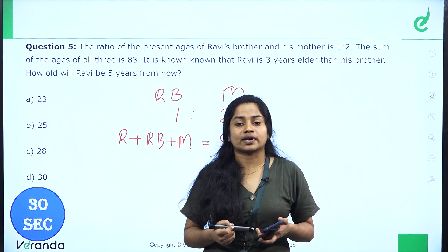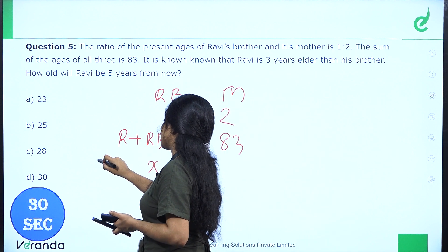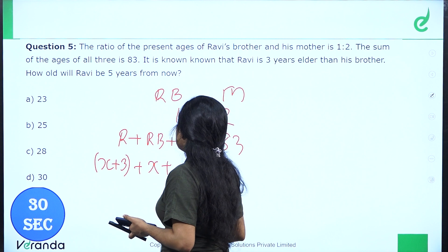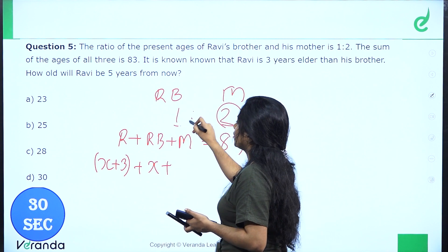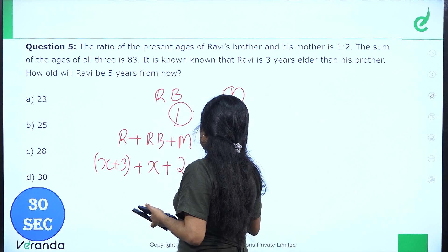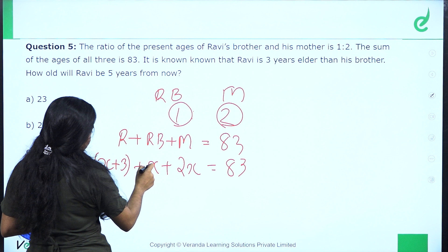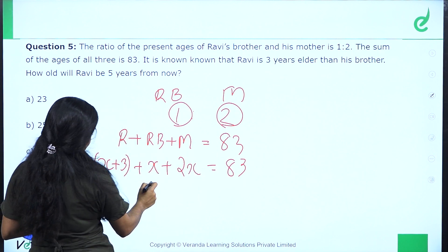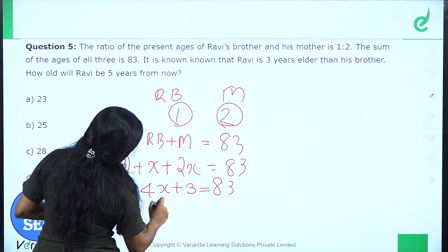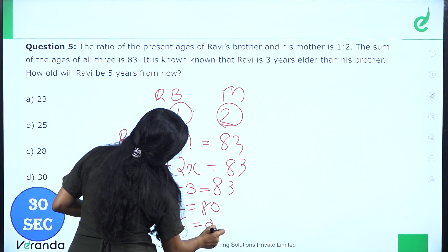Let Ravi's brother's age be X. Then Ravi's age is X plus 3. Since the brother-to-mother ratio is 1 is to 2, the mother's age is 2X. So the equation is: X plus (X plus 3) plus 2X equals 83, which gives 4X plus 3 equals 83, so 4X equals 80, meaning X equals 20.